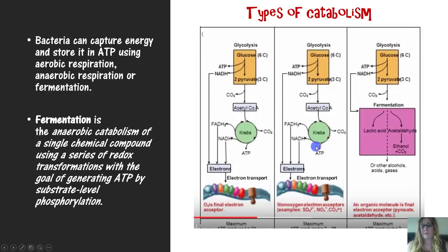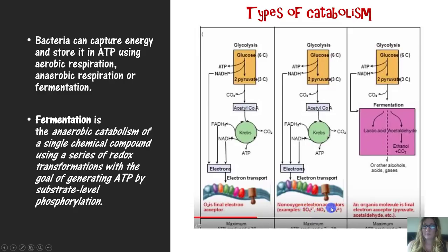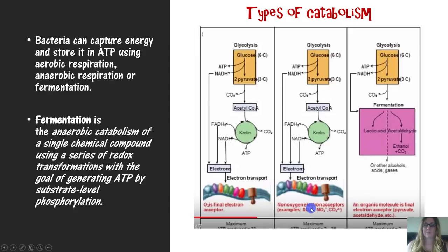The second block also has glycolysis, transition reaction, citric acid cycle, and electron transport chain. However, instead of having oxygen, it has non-oxygen electron acceptors — such as carbonate, nitrite, and sulfate, but not oxygen. This is anaerobic respiration. The third block is fermentation, which is also a type of anaerobic respiration.